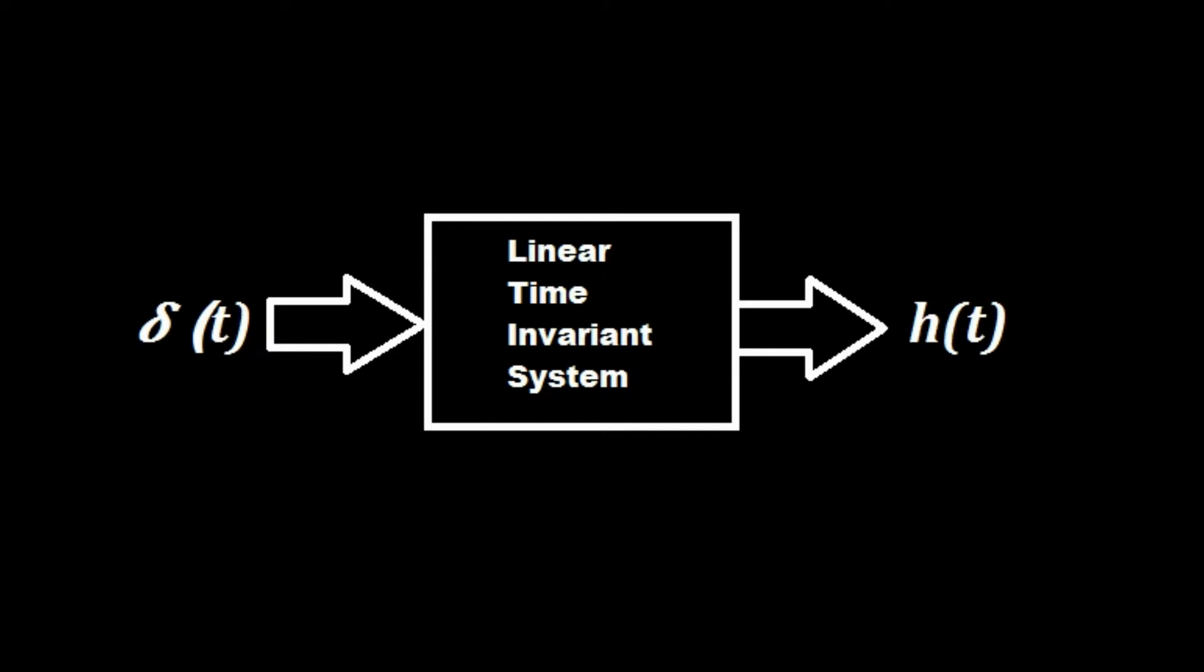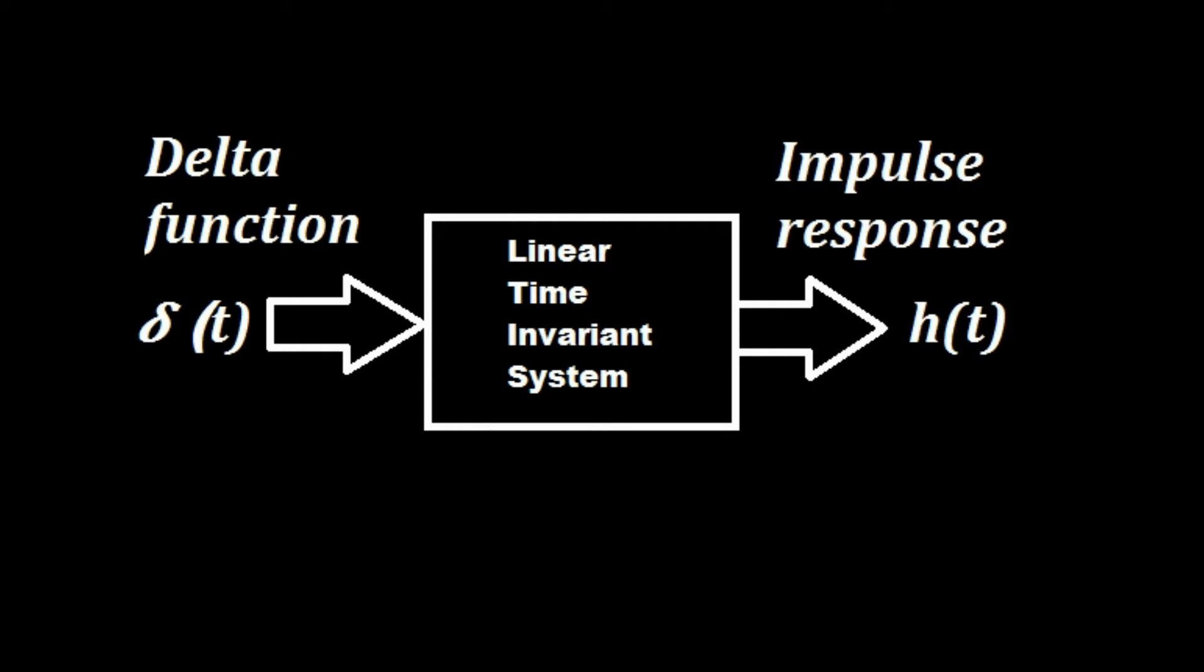A linear system means a system which possesses the property of superposition. Time invariant system means its behavior and characteristics are fixed over time.